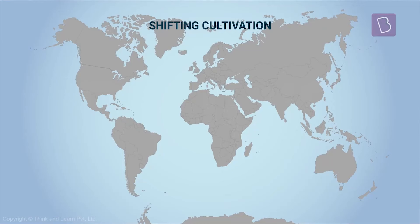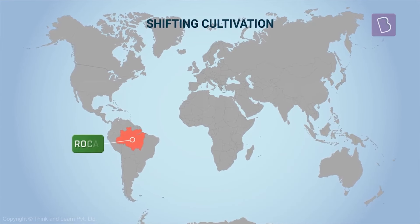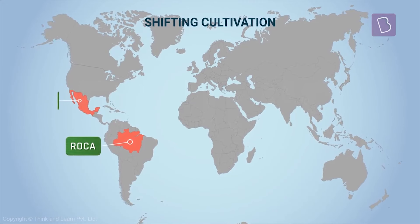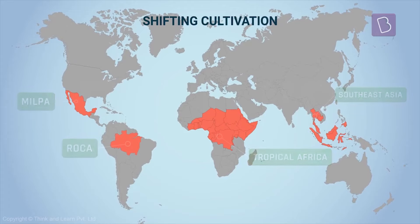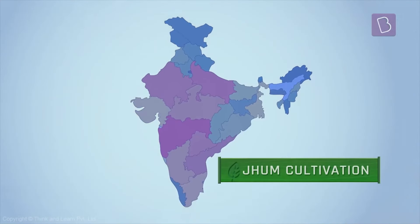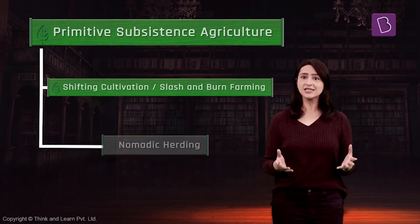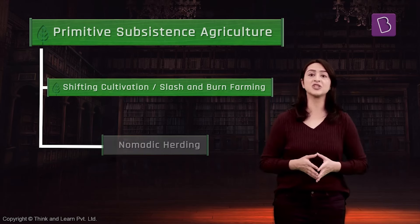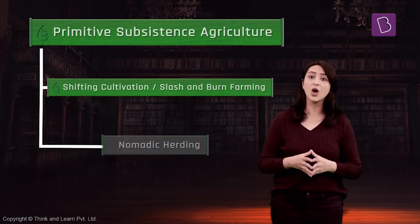This type of farming is practiced in the thickly forested areas of the Amazon basin in Brazil where it is called Roka, Mexico where it is called Milpa, tropical Africa, and parts of Southeast Asia. In India it is known as Jhoom cultivation and is practiced in the northeastern part of India as well as some regions of the Chotanagpur Plateau. Nowadays many countries have prohibited shifting cultivation as it is harmful to the environment and leads to a loss of biodiversity.